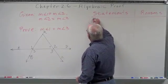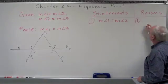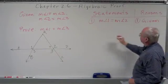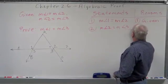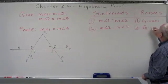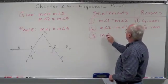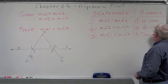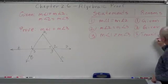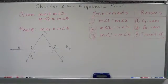Number 1: measurement of angle 1 equals measurement of angle 2. Why? Given. Statement number 2: measurement of angle 2 equals measurement of angle 3. Why? Given. Statement number 3 — one of the properties — therefore, measurement of angle 1 equals measurement of angle 3. Why? Transitive. And we're done. Simply using the transitive property to let us know what's going on.